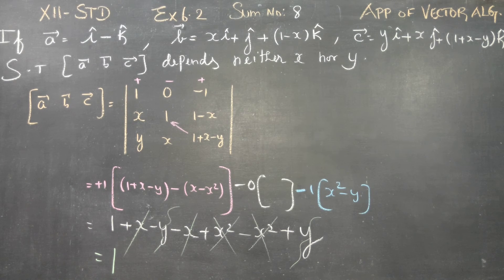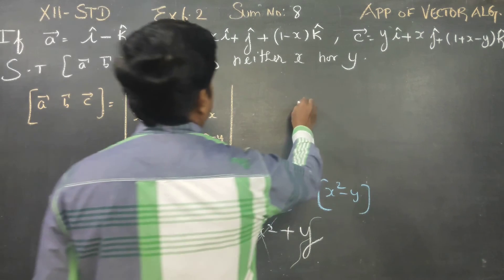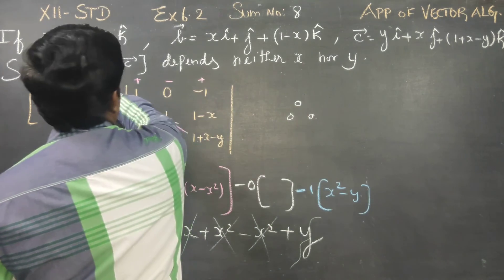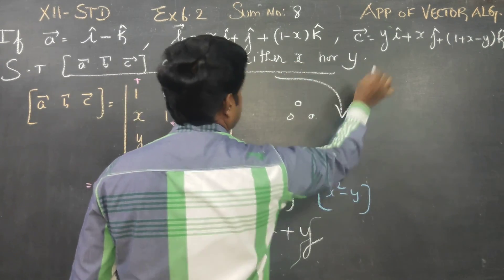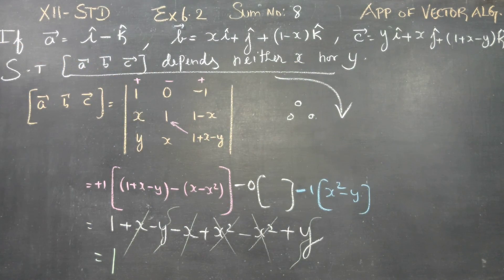It is independent of x and y. The box product value is 1, which does not depend on x or y. Therefore, A, B, C depends neither on x nor y. It is independent of x and y. Thank you!